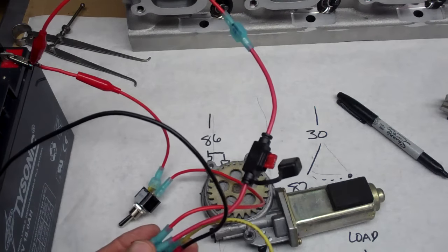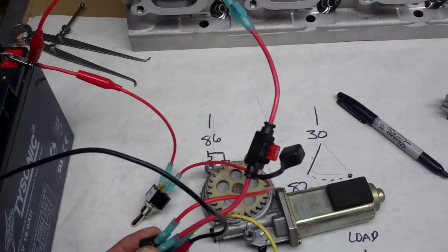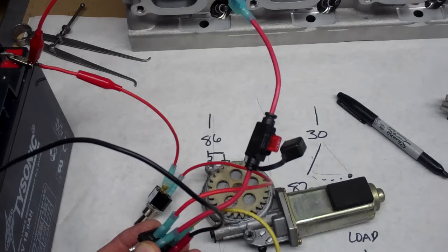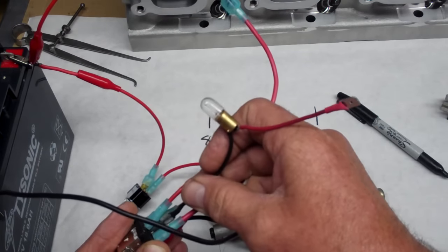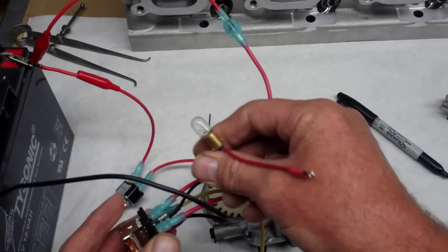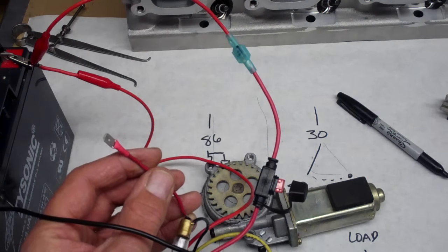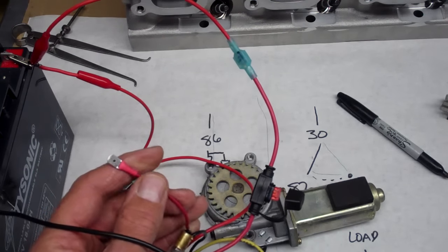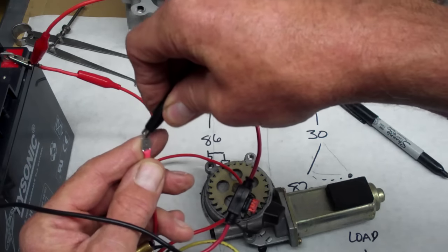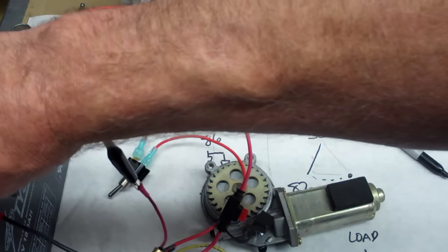Now there may be some situations where you may want to put maybe a light bulb or something like that off of terminal 87A. Really the only reason you would do that would be if you had a situation where maybe you wanted to have a light on to tell you that something was off and then the light would go off when it was on. But it could be done.